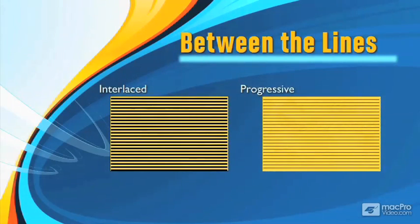The other way of shooting is progressive, where all the lines are shot at one time. All the gold lines are shot at the same instant. The classic example of progressive is film.